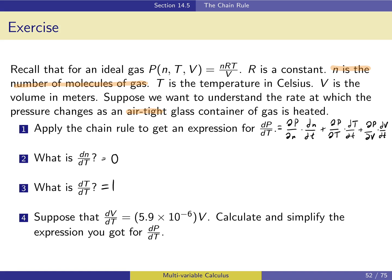For the partial derivatives: the partial of p with respect to T is nR/V, times 1. The next partial derivative — the partial of p with respect to V — is minus nRT over V squared. And dV/dT is 5.9 times 10 to the negative 6 times V. You could simplify this further, giving the full expression for dp/dT.